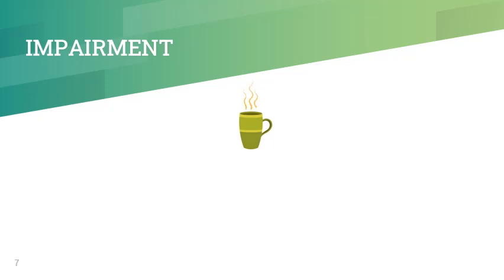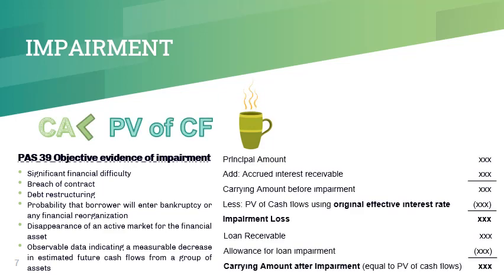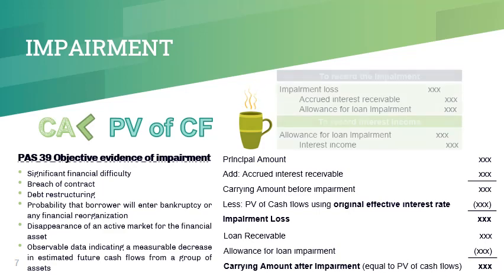Let's proceed to impairment. Under PAS 39, an entity shall assess at every end of the reporting period whether there is objective evidence that a financial asset or a group of financial assets is impaired. Impairment occurs when the carrying amount is greater than the present value of cash flows; the difference is recognized as impairment loss. Take note that the carrying amount of the loan includes any accrued interest receivable. Moreover, the expected cash flows should be discounted using the original effective interest rate. Subsequently, interest income is computed as present value times effective interest rate and charged to the allowance for loan impairment.